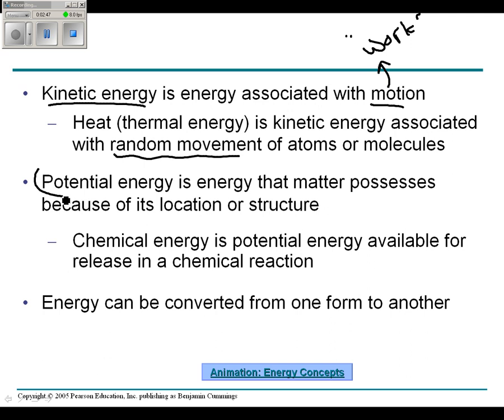Potential energy is the energy that matter possesses because of its location or structure. Chemical energy is an example of potential energy available to release in a chemical reaction. In organisms, we're really going to spend a lot of time talking about chemical energy. Energy can be converted from one form to another but not lost.